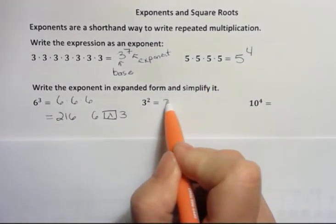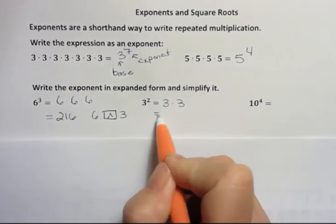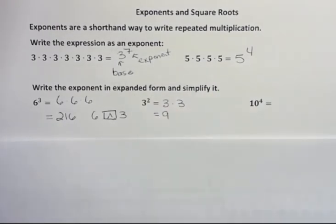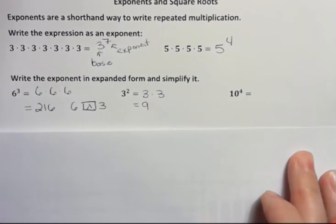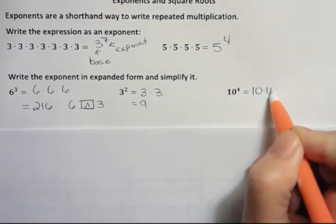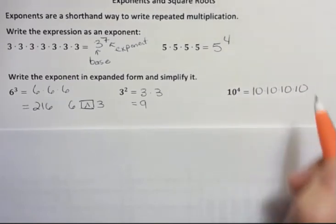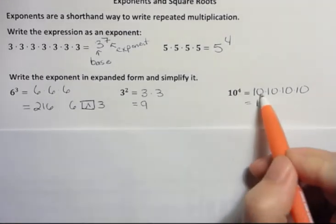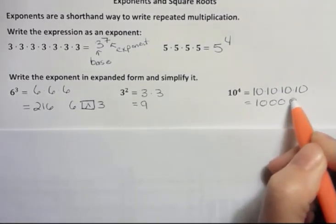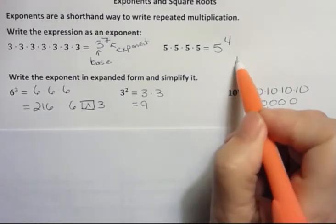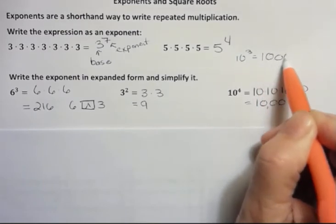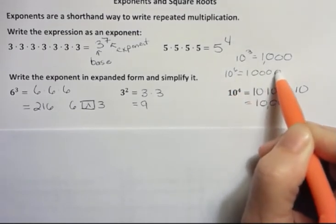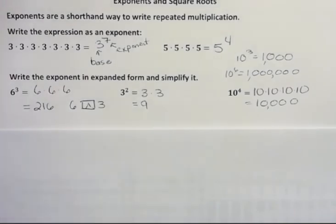3 to the second power means 3 times 3, which is just 9. Sometimes when people see 3 to the second power, they write 6 because they're so used to doing that. 10 to the fourth power: the base is 10 and we're repeating it 4 times. Anytime you have a power of 10, it's so easy — you just keep the 1 and then write the number of zeros: 1, 2, 3, 4. So that would be 10,000. If I had 10 to the third power, that would be 1 with 3 zeros. And 10 to the sixth power would be 1 with 6 zeros. That's how powers of 10 work, so they're really easy to work with.